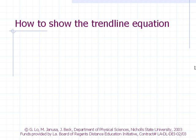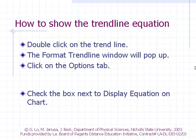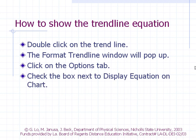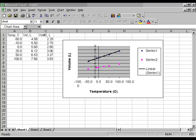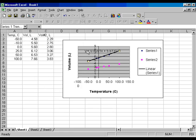How to show the Trendline Equation: Double-click on the Trendline — the Format Trendline window will pop up. Click on the Options tab and check the box next to 'Display Equation on the chart.' Drag the equation to the desired location on the chart.